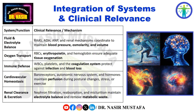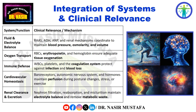Integration of systems and clinical relevance: RAS, ADH, ANP, and renal mechanisms work together to maintain blood pressure, osmolarity, and volume. RBCs, erythropoietin, and hemoglobin ensure tissue oxygenation. WBCs, platelets, and the coagulation system protect against infection and blood loss. Baroreceptors, the autonomic nervous system, and hormones maintain adequate perfusion during postural changes, stress, or exercise. Nephron filtration, reabsorption, and micturition maintain electrolyte balance and remove metabolic waste.